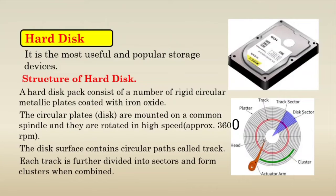A hard disk pack consists of a number of rigid circular metallic plates coated with iron oxide. The circular plates or disks are mounted on a common spindle and rotated at high speed, approximately 360 RPM. The disk surface contains circular paths called tracks, and each track is further divided into sectors, which form clusters when combined.